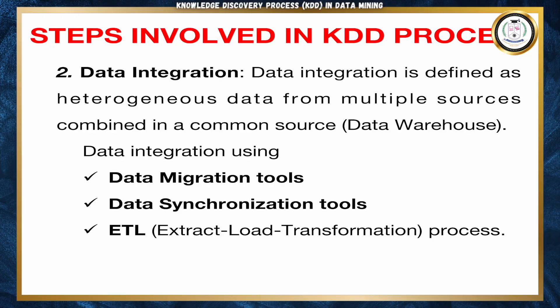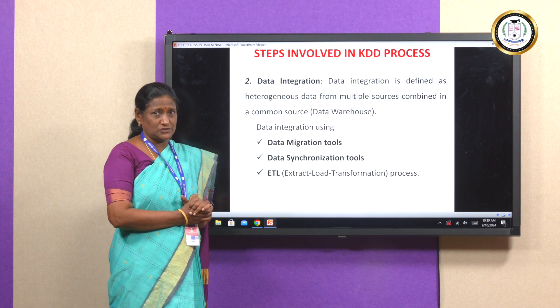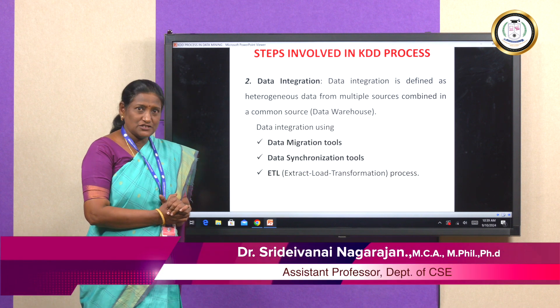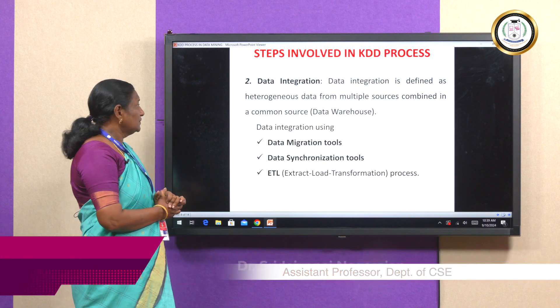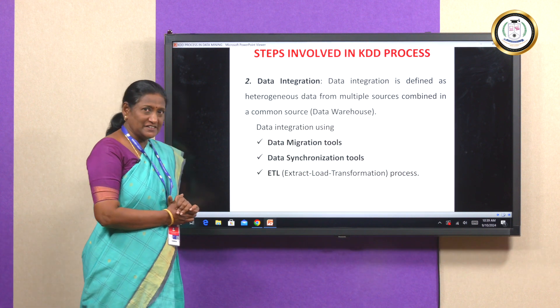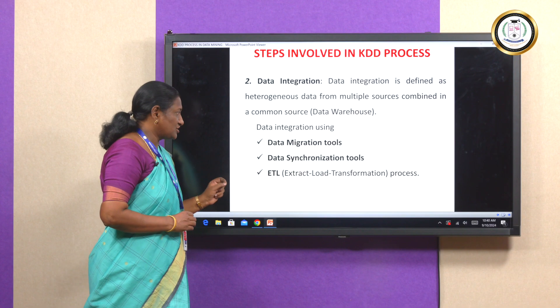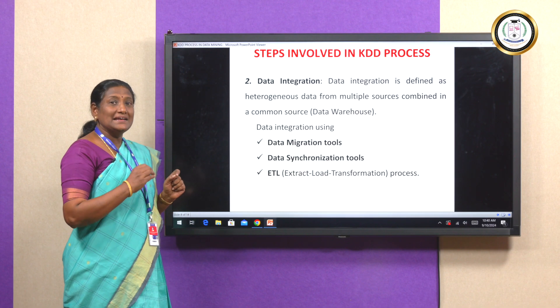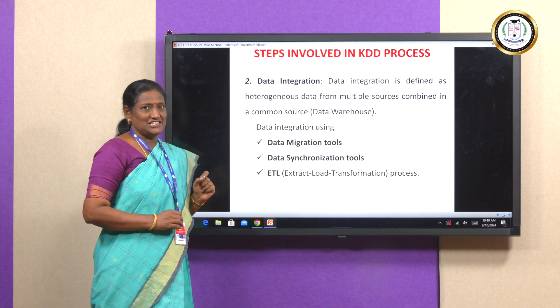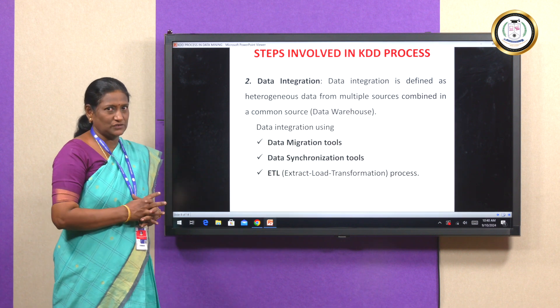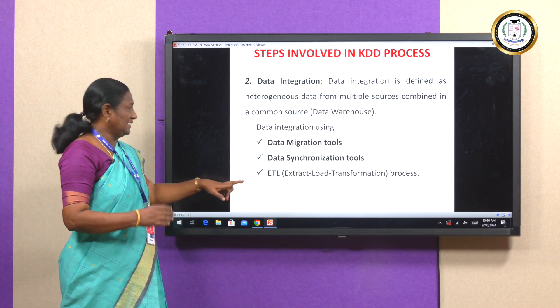Next is data integration, defined as combining heterogeneous data from multiple sources into a single unified form. This integration is done using data migration tools and data synchronization tools. Integration is also performed using the ETL process — Extraction, Loading, and Transforming the data into the necessary format. In the second step, data from different sources is integrated and prepared for the next step.